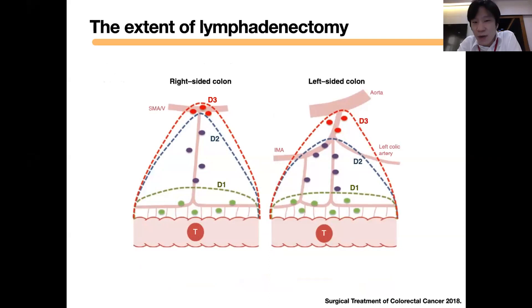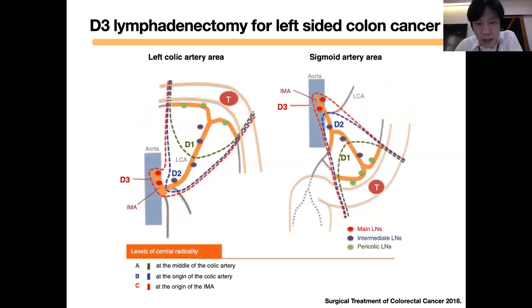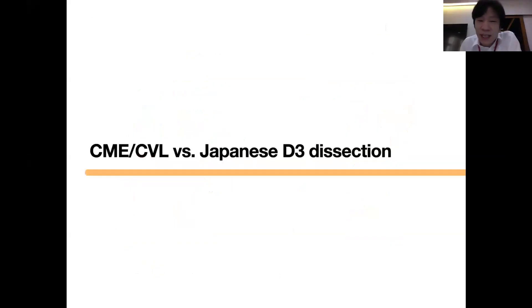For D3 dissection, they separate by tumor location. For right-side colon cancer, D3 dissection requires retrieving lymph nodes down to the SMA. The lymph nodes in the anterior part of the SMA must be dissected. For left colon and sigmoid colon cancer, lymph nodes around the IMA must be retrieved.